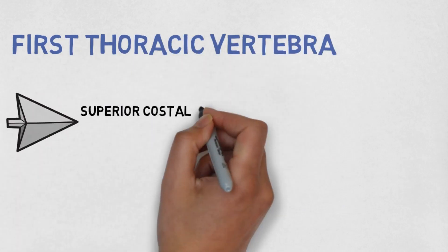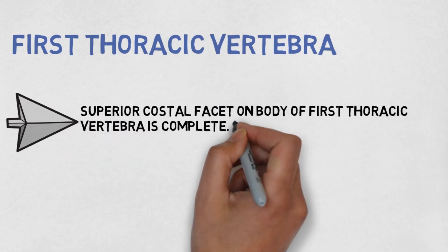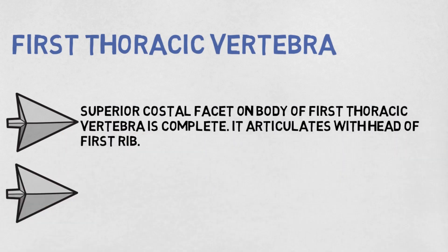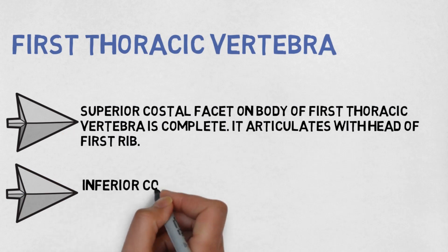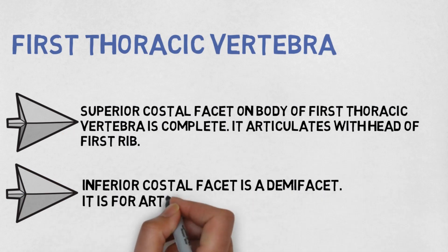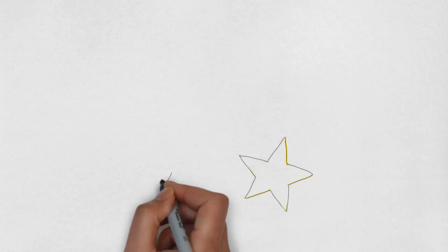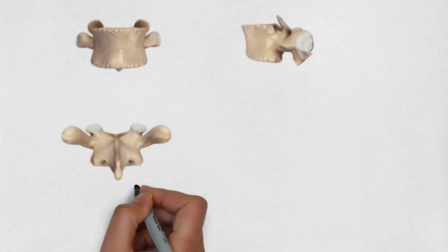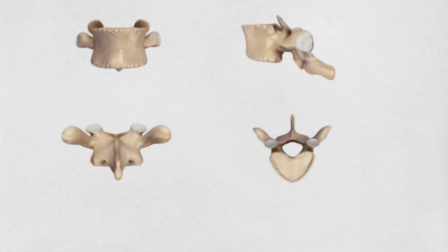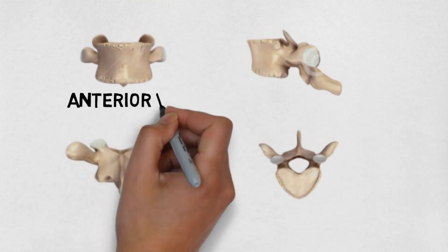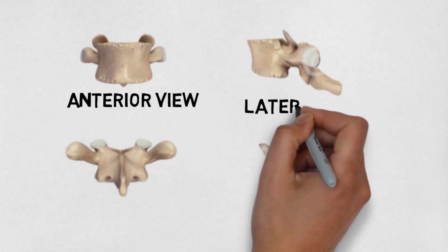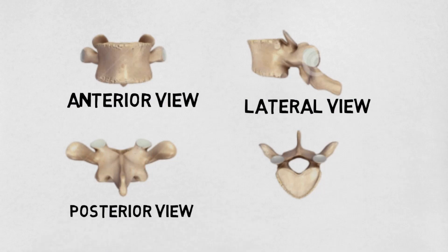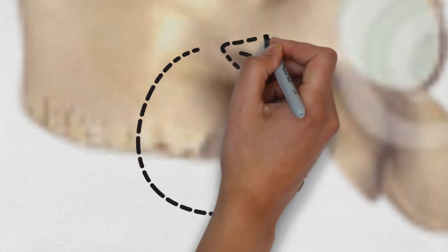Next we have the first thoracic vertebra. The superior costal facet on the body of the first thoracic vertebra is complete and it articulates with the head of the first rib. The inferior costal facet is a demi-face — half of a facet — for attachment with the second rib. Let's see the first thoracic vertebra from different points of view: this is the anterior view, this is the lateral view, this is the posterior view, and this is the superior view. The inferior costal facet in this vertebra is a demi-face — don't forget that.